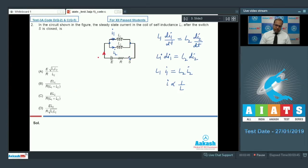Now in steady state the inductor coil will behave like a conducting wire. So in that case the current I is equal to E by R. So we have to calculate the current through self inductance L1 in the steady state. So current I1 is equal to L2 divided by L1 plus L2 of I that is E by R. So option C is the correct answer.